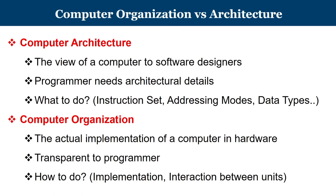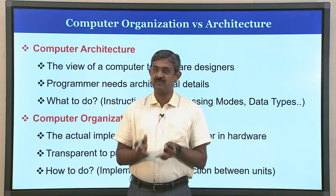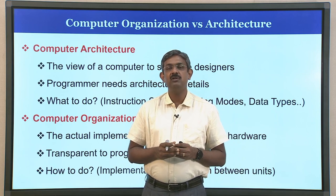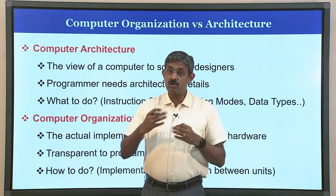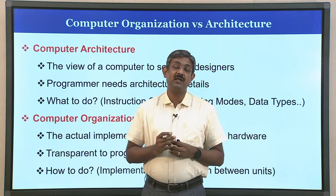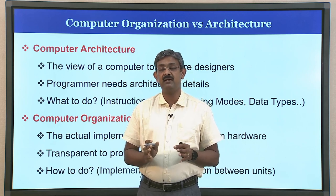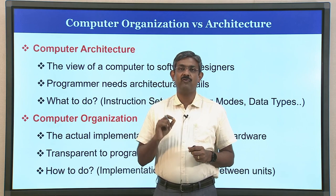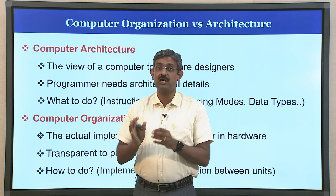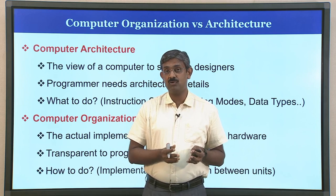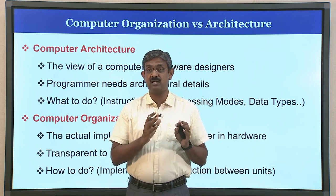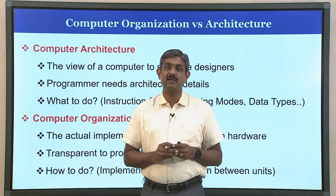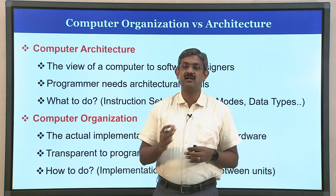For example, a programmer needs to know how a multiplication operation is specified, how to specify an operand, but he should not need to know how the actual multiplication is carried out inside a computer. The process of implementing a multiplication operation is an organizational feature, whereas the addressing modes and instruction set used to perform multiplication are architectural features.